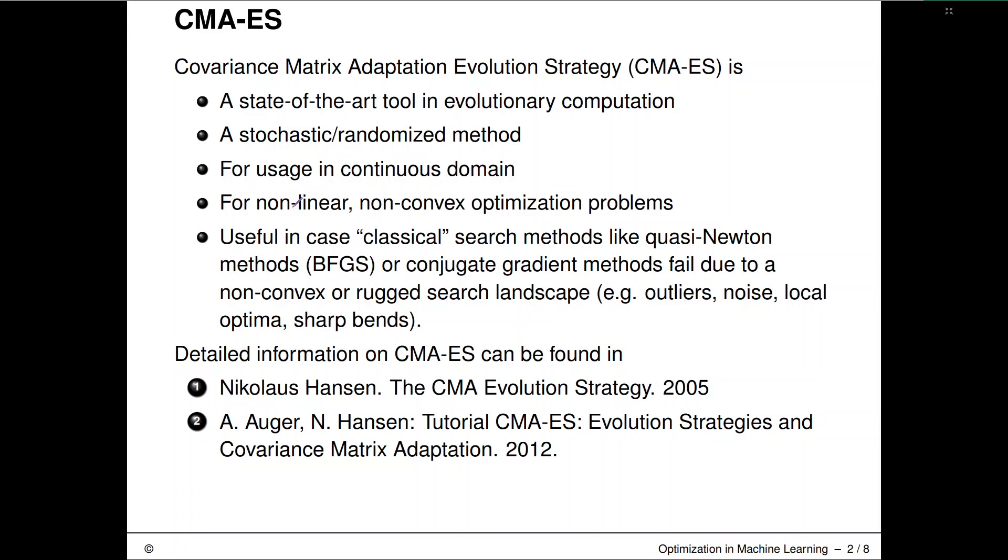I've told you it's mainly geared towards continuous domains. It's an estimation of distribution algorithm, and it usually works well in non-linear, non-convex regimes where methods like quasi-Newton techniques like BFGS or conjugate gradients fail, because we have this non-convex and rugged search landscape. If you are interested more in the details of the algorithm, we have linked pretty popular and well-known tutorials by the main author of the CMA-ES, Nikolaus Hansen.